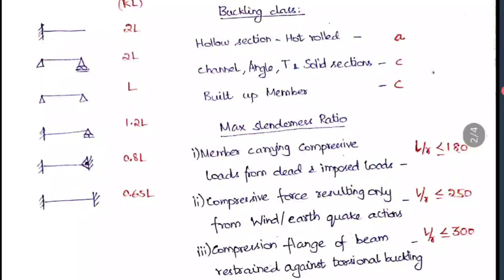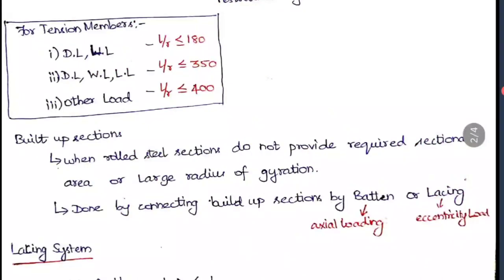For tension members, the slenderness ratio limits are: when only dead load and live load is applied, ≤ 180; when all three loads including wind or earthquake are applied, ≤ 350; and when any other extra load is applied, ≤ 400.